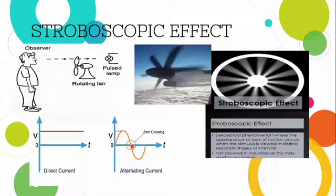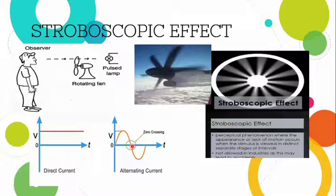In normal homes and residential settings, the stroboscopic effect is less of a concern. However, in large factories, machines, and big shops, if we have the stroboscopic effect it will produce some unwanted and potentially harmful effects, and we have to identify the rotating parts that are affected.